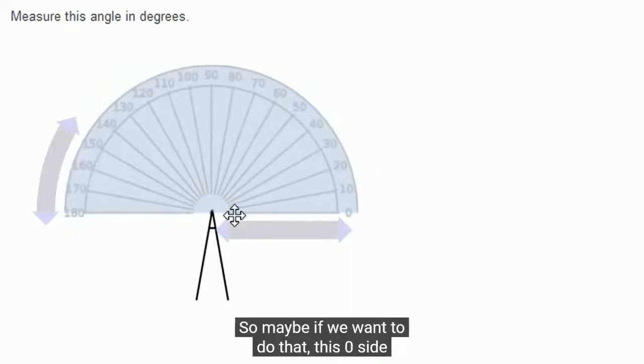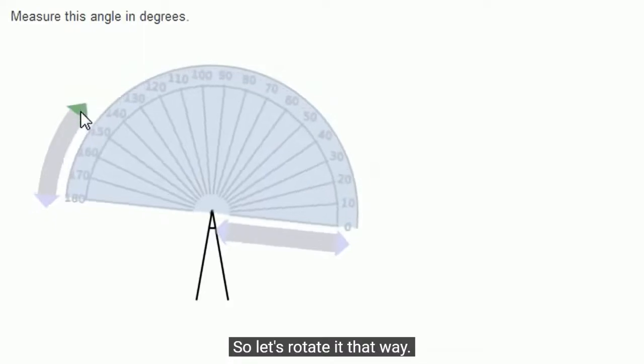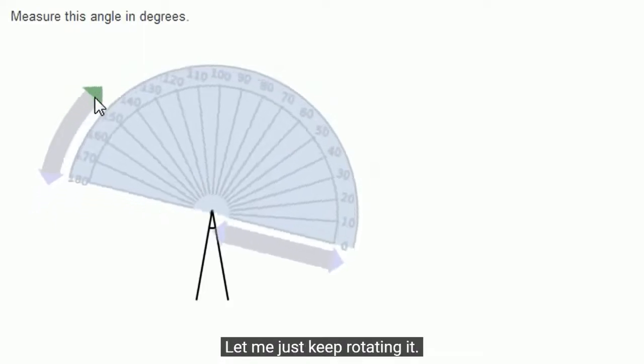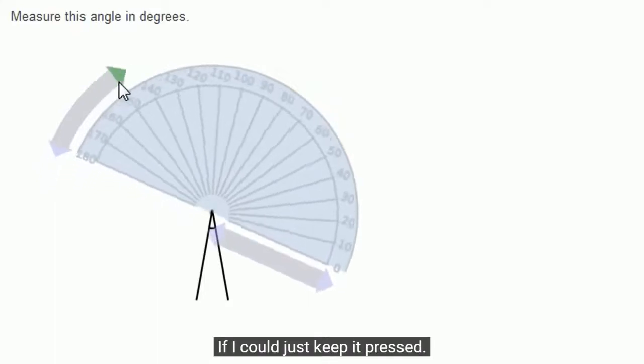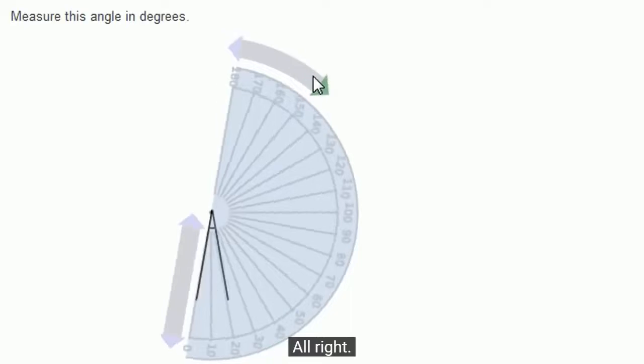Maybe we could put this zero side at this side of the angle. So let's rotate it. Let me just keep rotating it. That looks about right. So one side is at the zero mark, and then my angle, my other side, or if this was a ray,